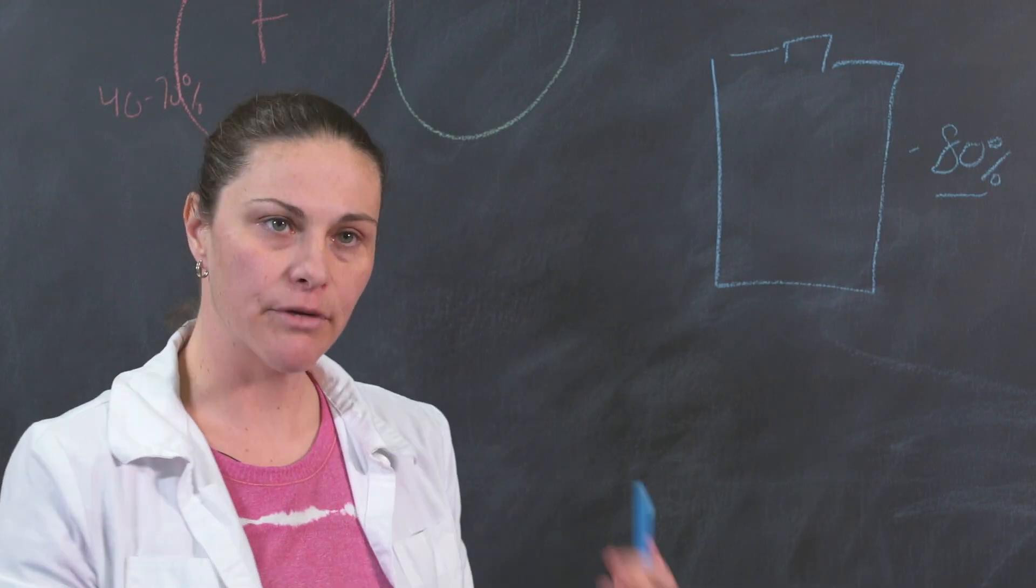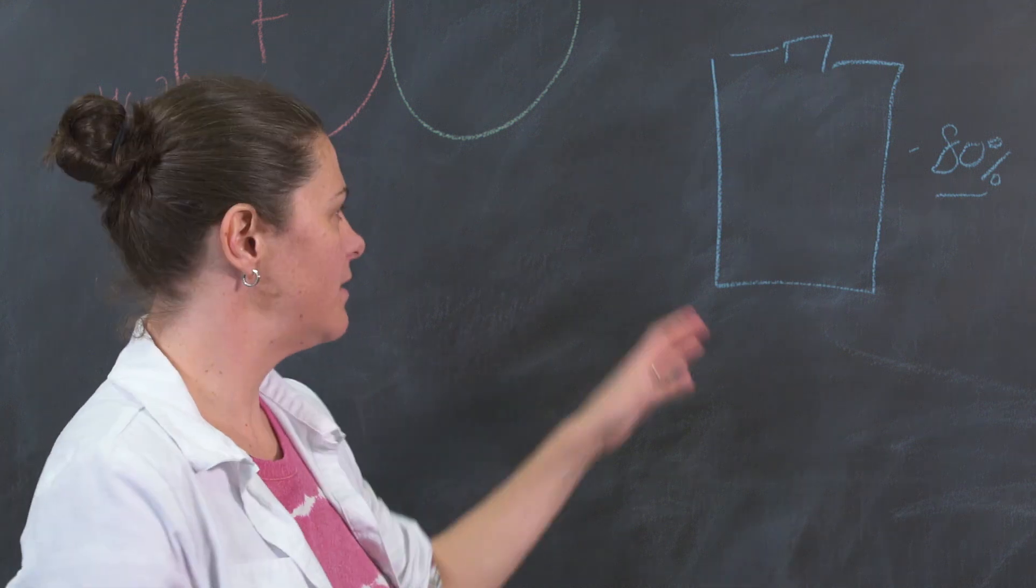Glutathione is depleted by things like lead, mercury, aluminum, cadmium, things like bisphenol A.